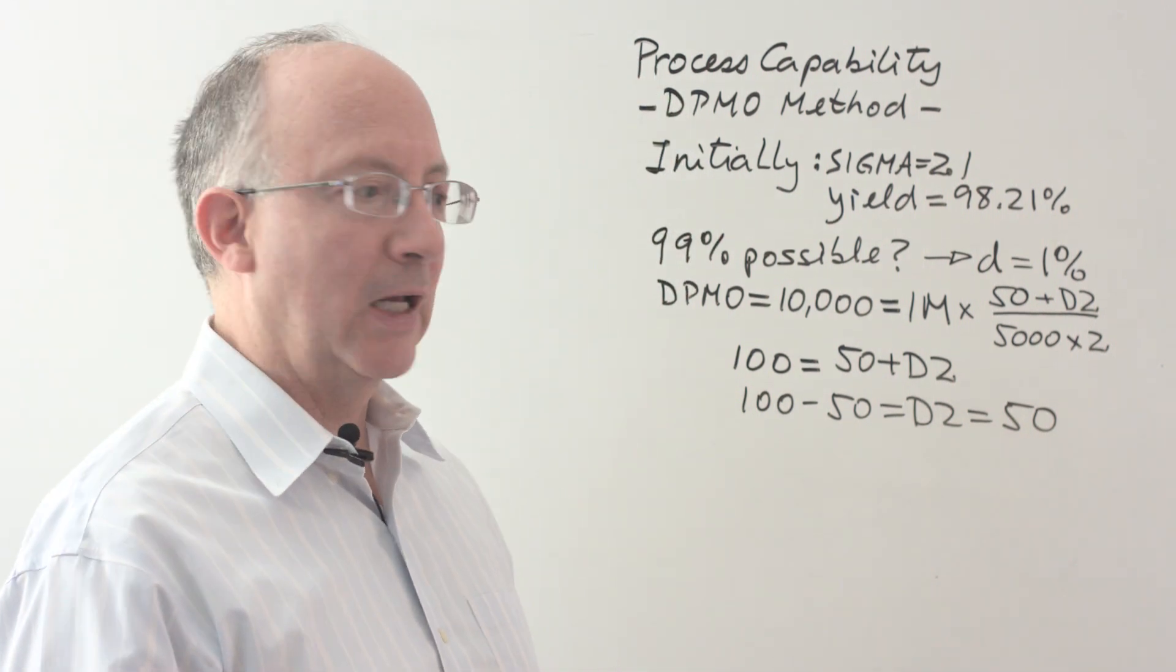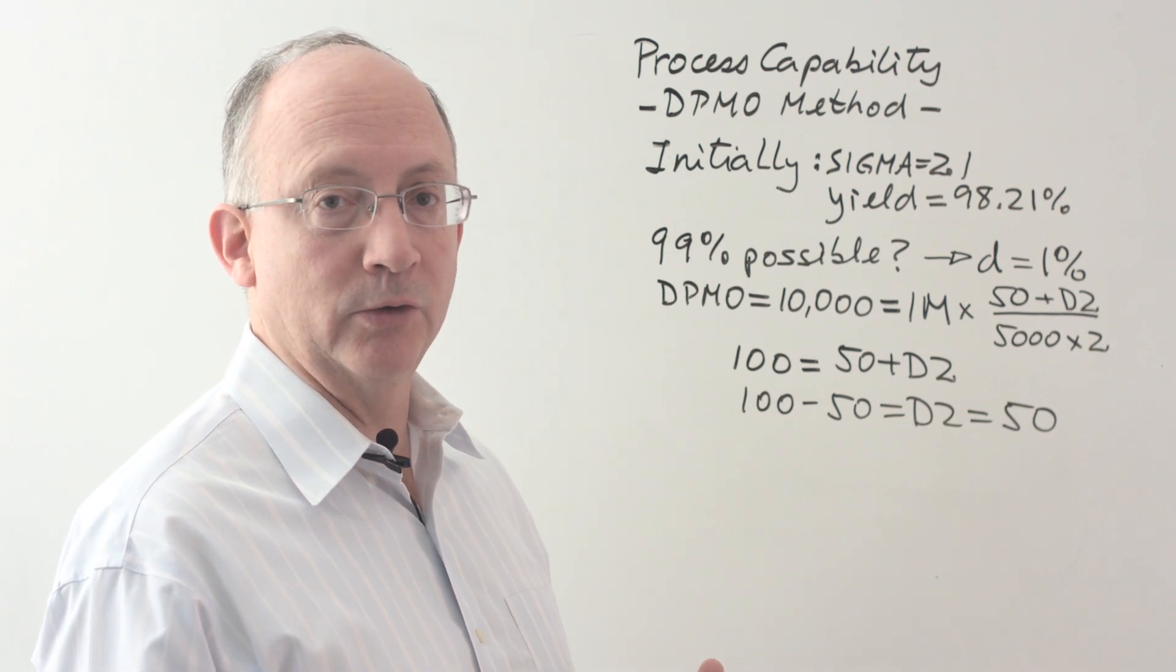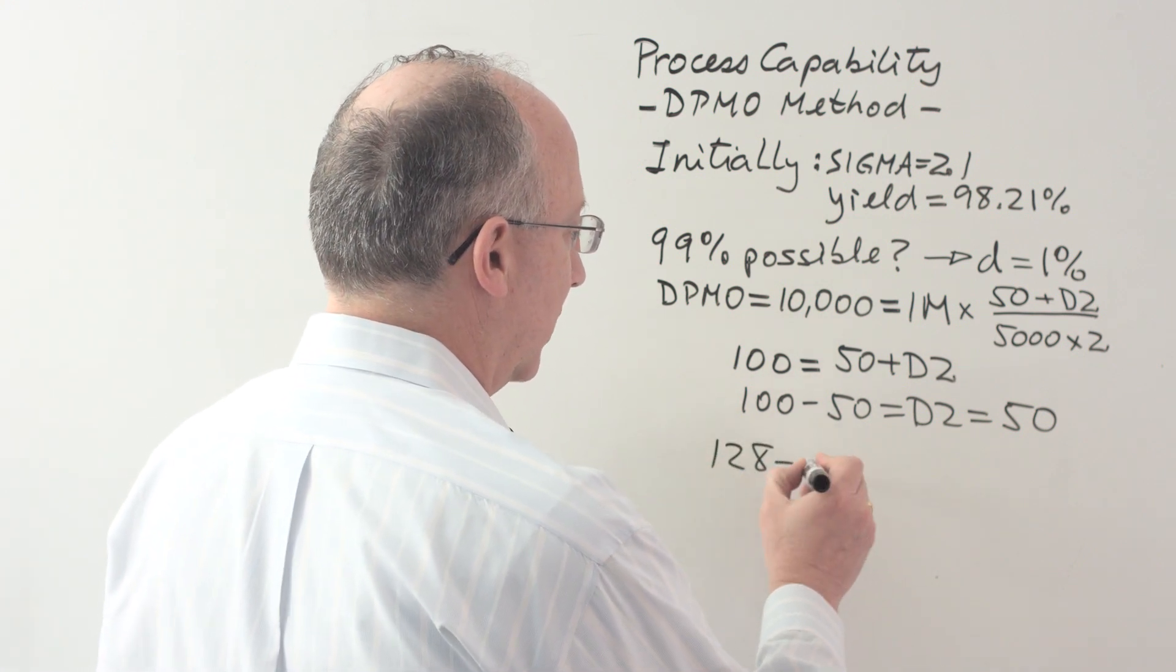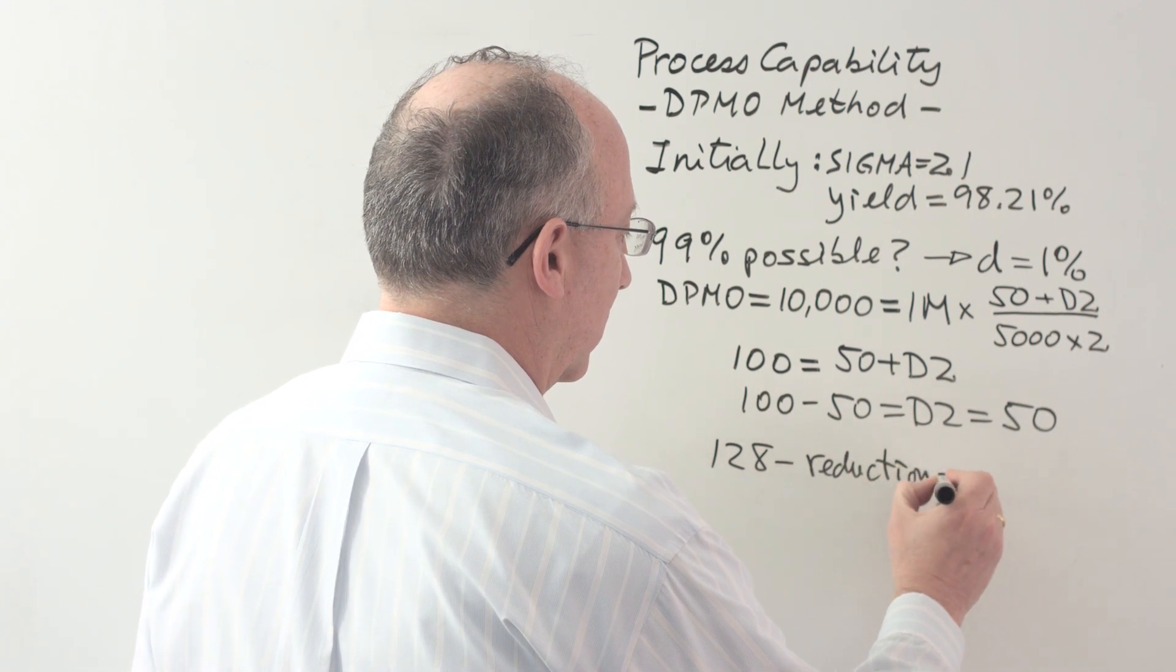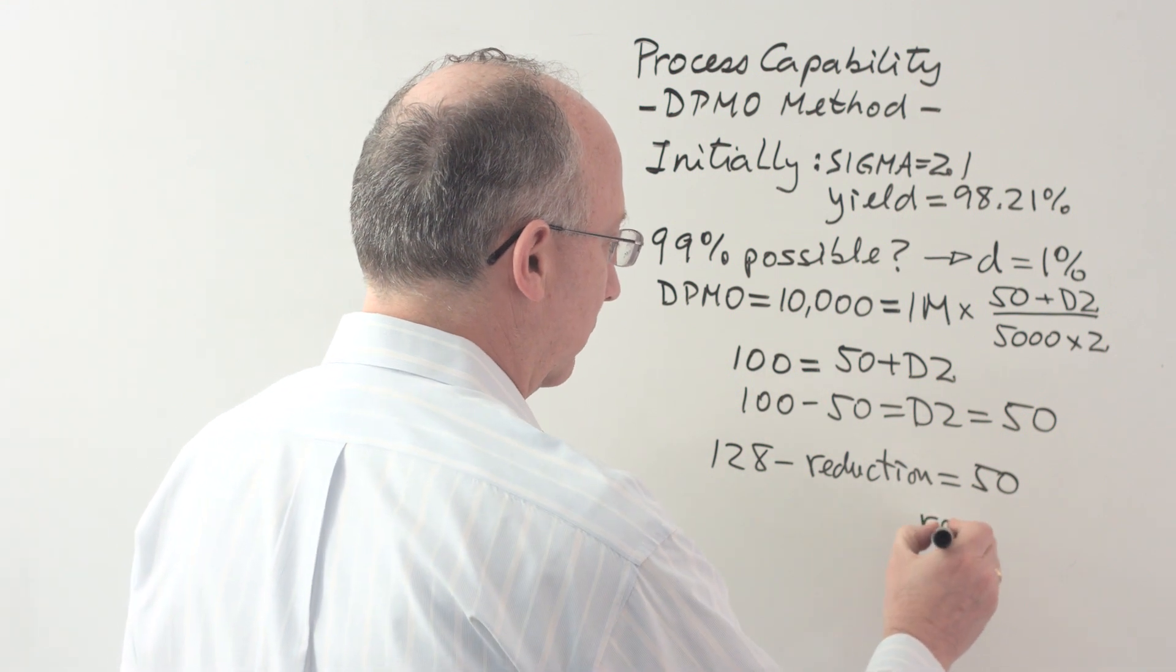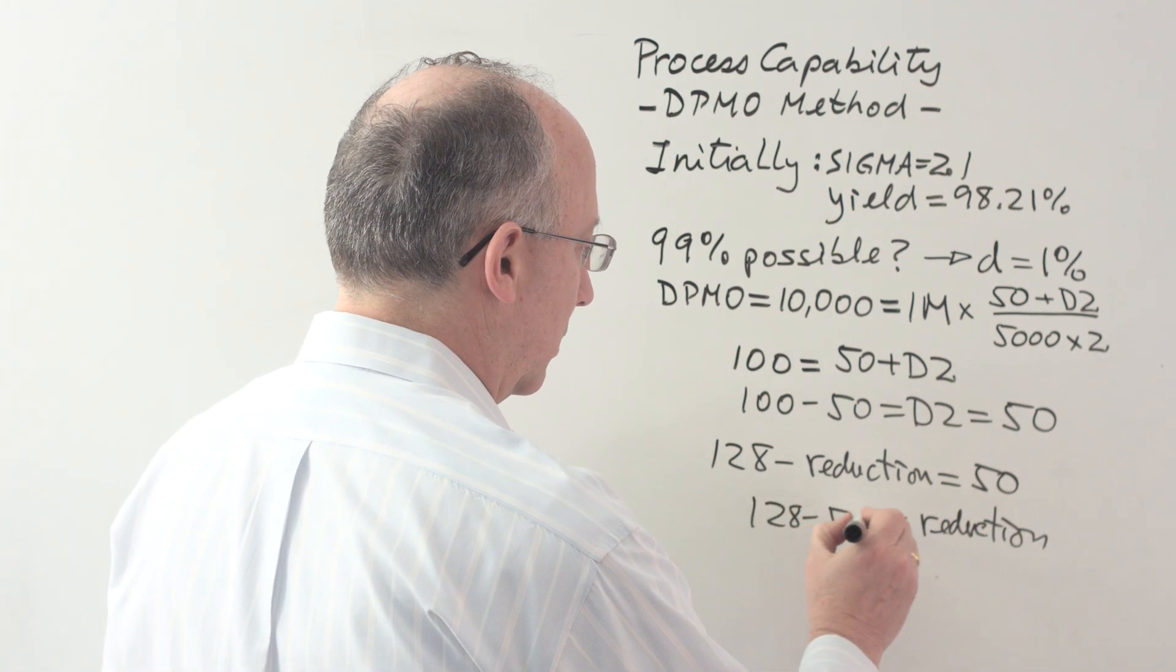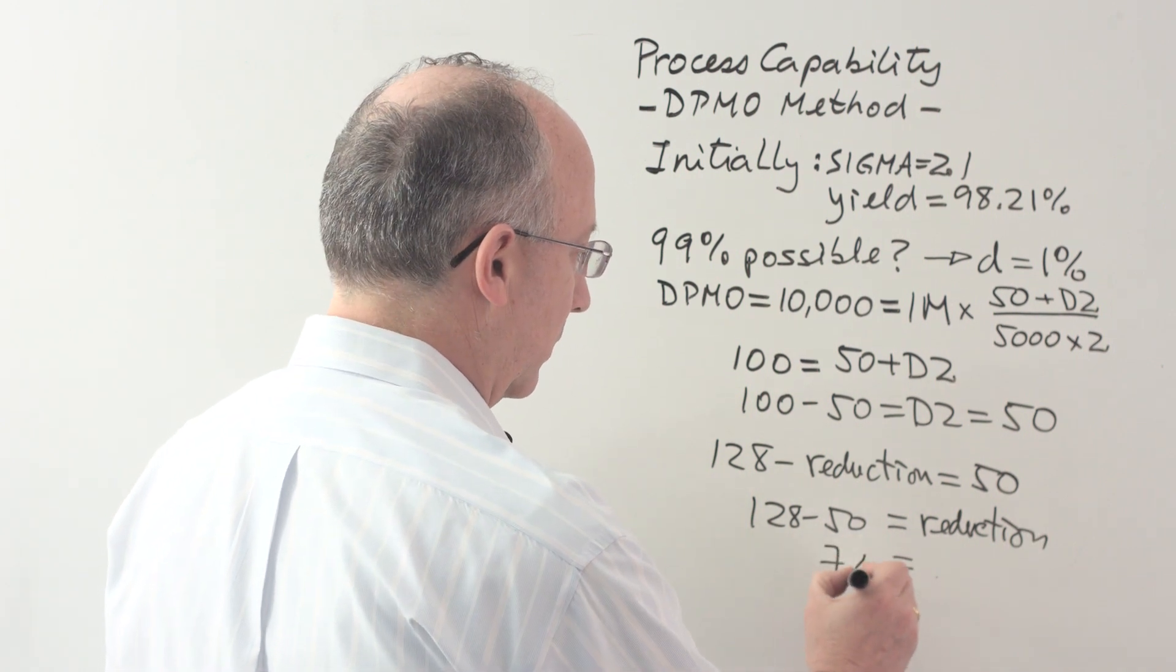If the question had been, what is the reduction that we need to have in the number of incomplete orders, remembering that we started with 128, so the initial value was 128 minus this reduction in order to get us to 50, then that would mean that the reduction is going to have to be equal to 128 minus 50 or a value of 78.